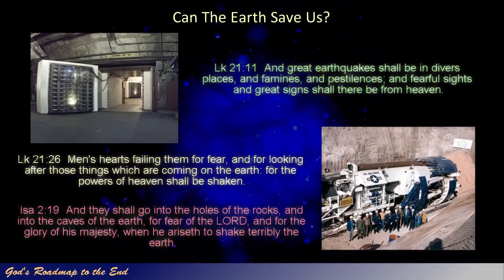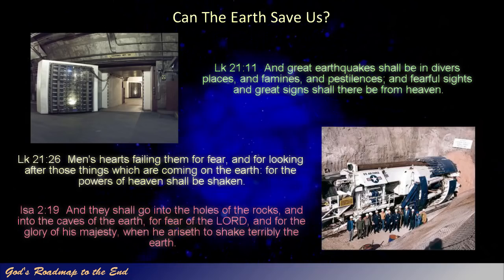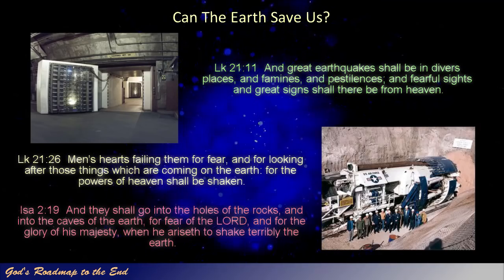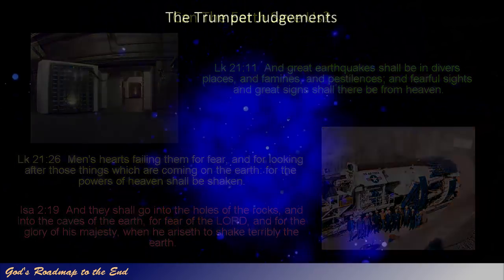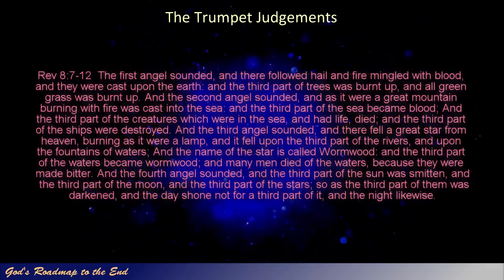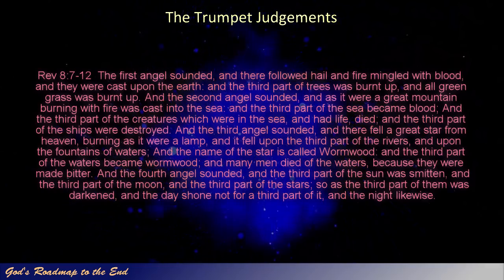For the next encounter with the great red dragon, it will be a totally different scenario compared to the time of Yeshua's crucifixion. A partial collision between Jupiter and a foreign planet approaching the inner part of the solar system could very well account for the events described in the trumpet judgments in the 8th chapter of Revelation. Revelation 8 verse 7 to 12: 'The first angel sounded, and there followed hail and fire mingled with blood, and they were cast upon the earth, and the third part of trees was burnt up, and all green grass was burnt up. And the second angel sounded, and as it were a great mountain burning with fire was cast into the sea.'